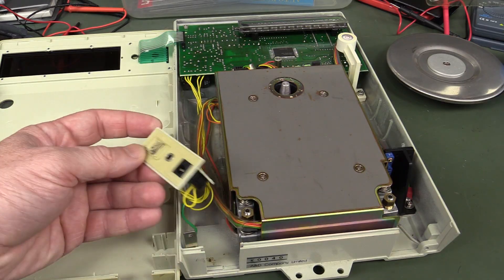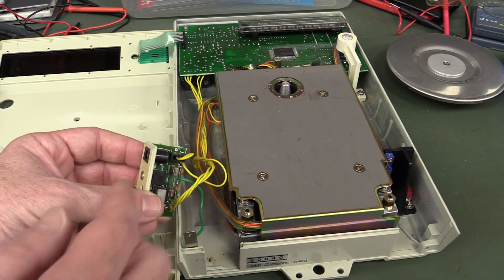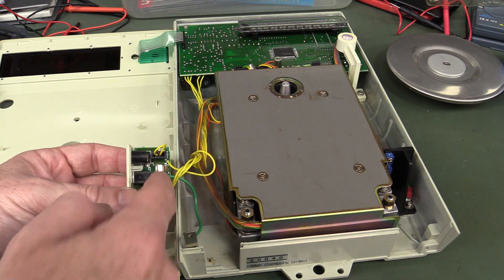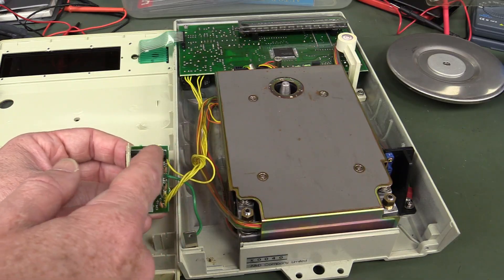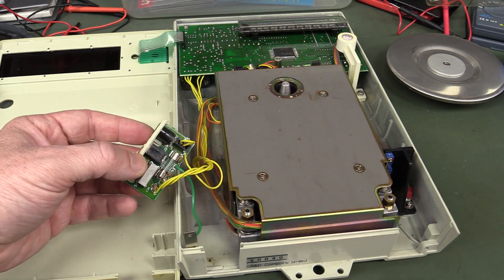And thankfully, we can just get access to the nice little board down here, which has our DC barrel jack, and the fuse which somebody blew the ass out of, and a little jumper connector over here.